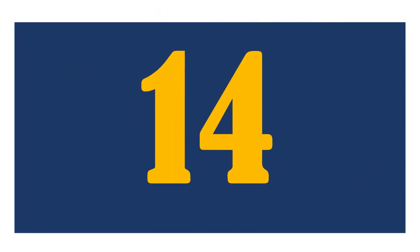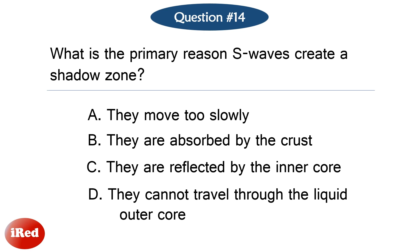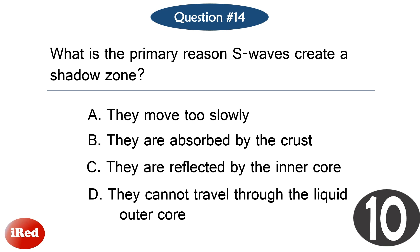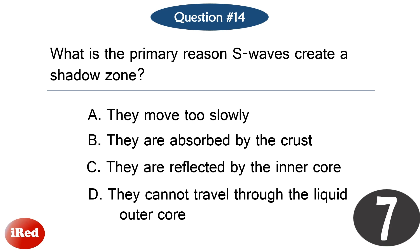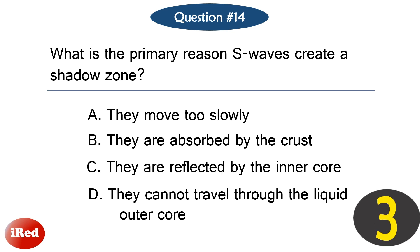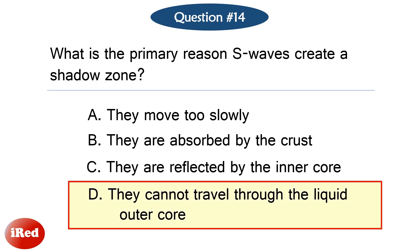Question number fourteen. What is the primary reason S waves create a shadow zone? The correct answer is letter D, they cannot travel through the liquid outer core.